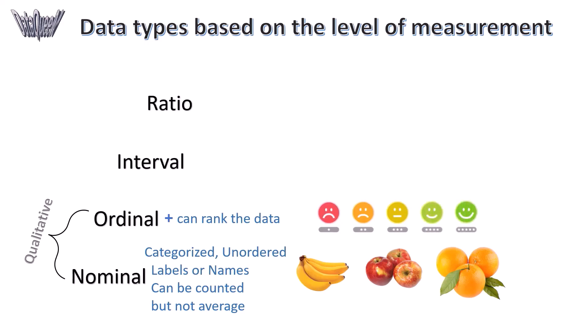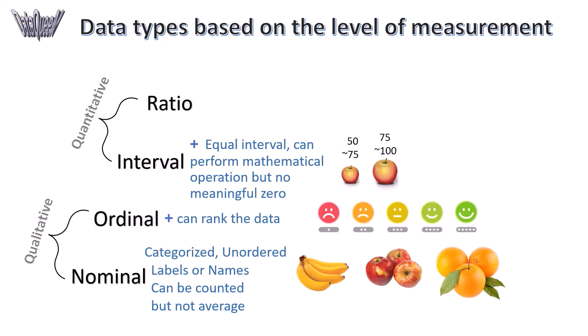Interval and Ratio are Quantitative Data Types. Interval data has the property of ordinal data and the interval between observations is expressed in terms of a fixed unit of measure. Any interval between each consecutive point of measurement is equal to every other. For example, apples that weigh between 50 and 75 grams, 75 and 100 grams, 100 and 125 grams. Interval data type doesn't have a meaningful zero point.